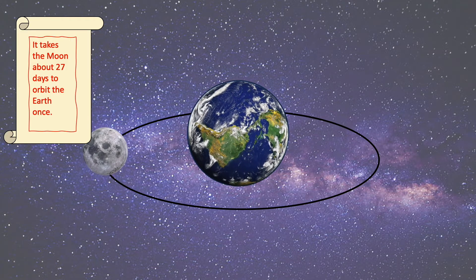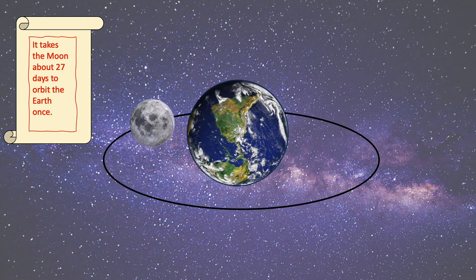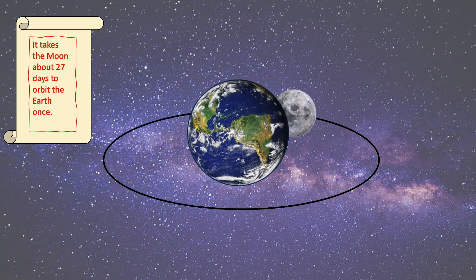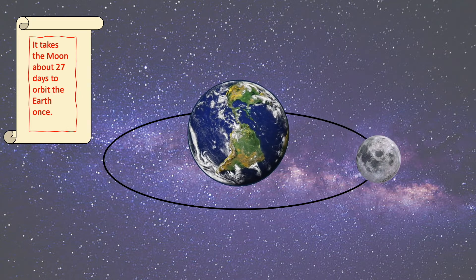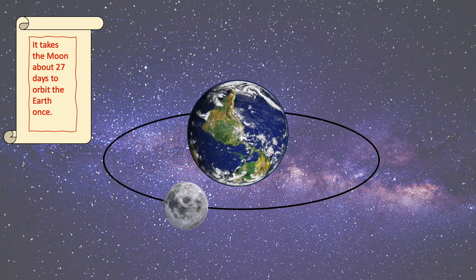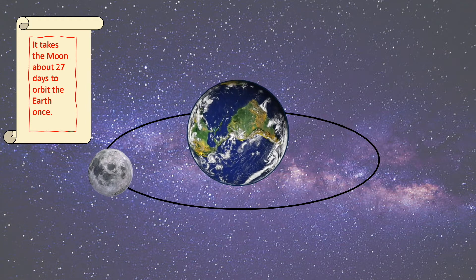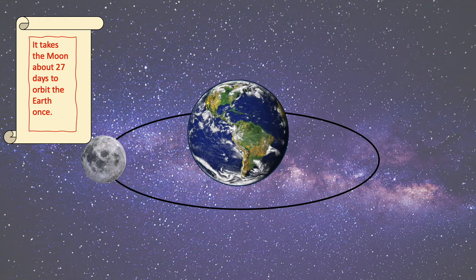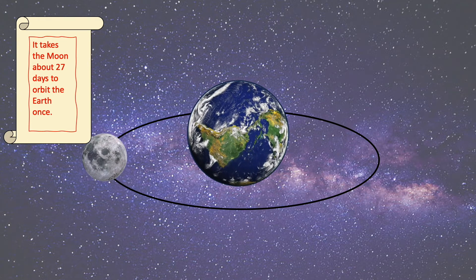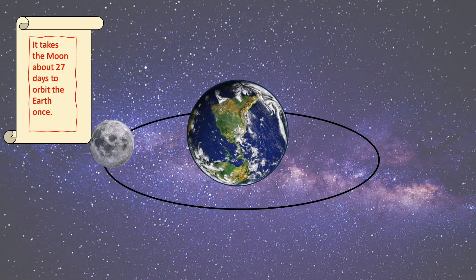The moon is an average of 238,855 miles away from earth, which is about 30 earths away. The reason we mention the average distance is that the moon is not always the same distance from earth — the orbit is not a perfect circle, it is an ellipse shape. It takes the moon about 27 days to orbit the earth once.